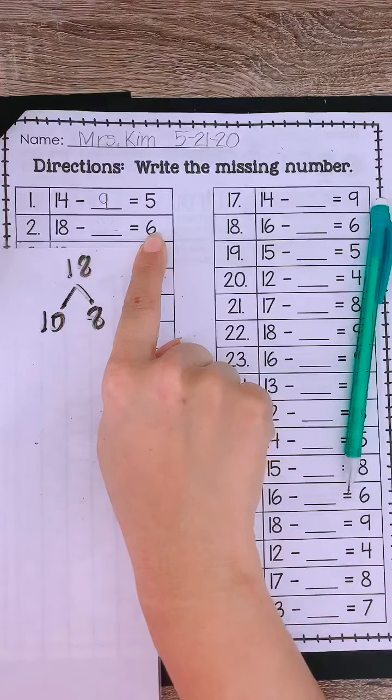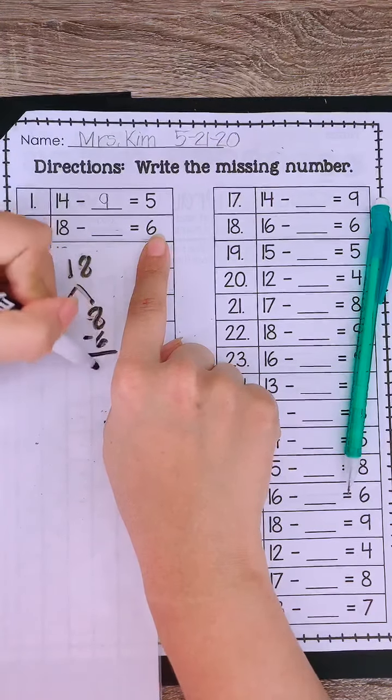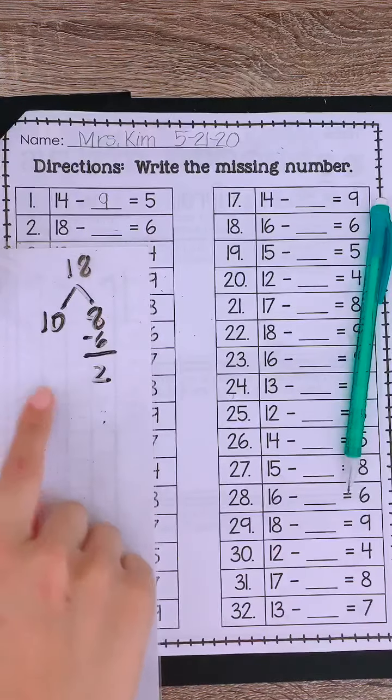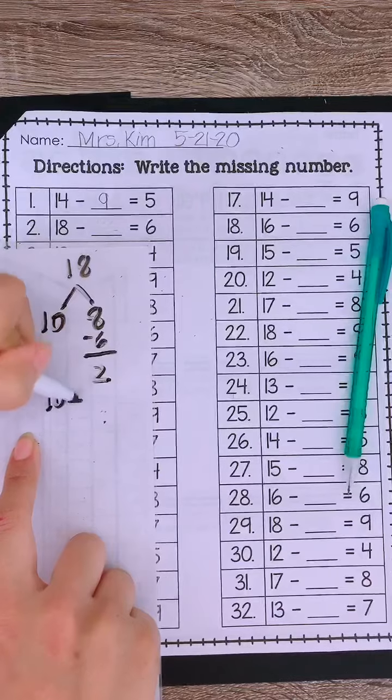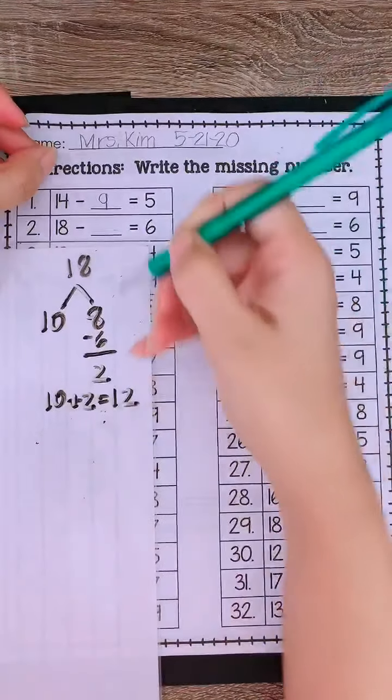And we could just take away 6 from the 8. If we take away 6, we get 2 left over, and we still have a 10. So we need to put that together. 10 plus 2 equals 12. And we write the 12 here.